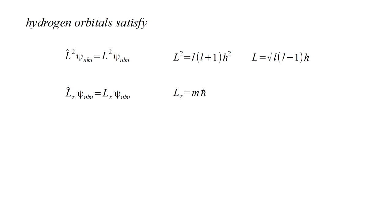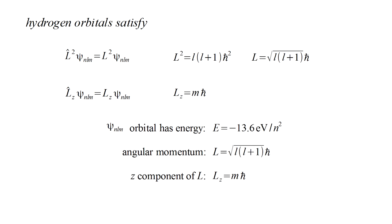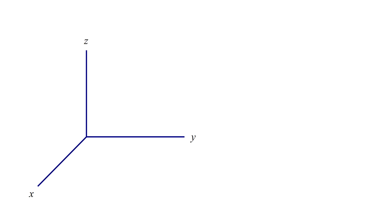We now see the physical significance of the three quantum numbers N, L, and M. N determines the energy, L determines the magnitude of angular momentum, and M determines the Z-component of angular momentum. Quantum mechanics doesn't appear to allow us to know the full angular momentum vector, only its length and one component. Let's try to visualize this.